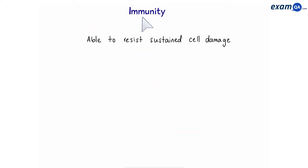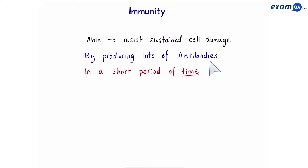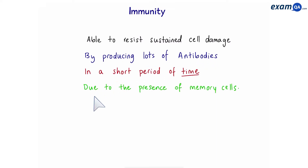To summarize immunity: it's when a person is able to resist sustained cell damage by producing lots of antibodies in a short period of time. And this is due to the presence of memory cells.